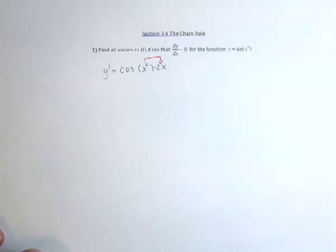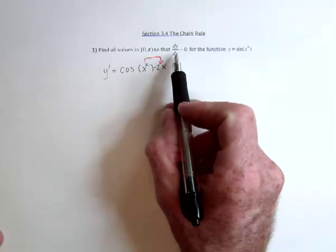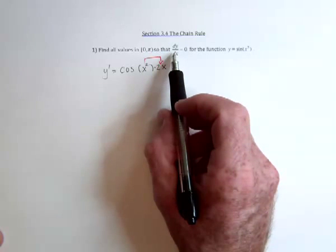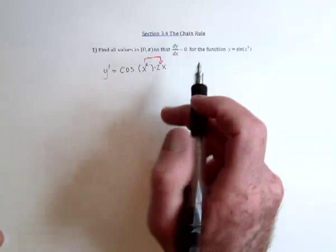Okay, so there's the derivative. Next, find out where the derivative is equal to zero, or in other words, where the slope of the tangent line is equal to zero.